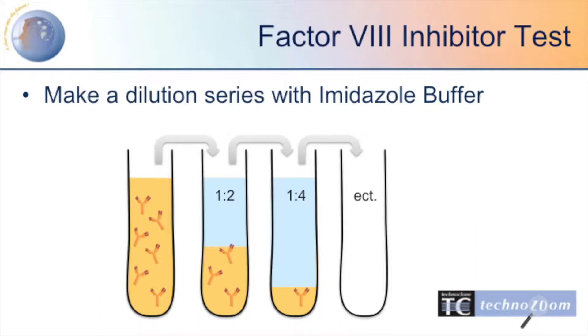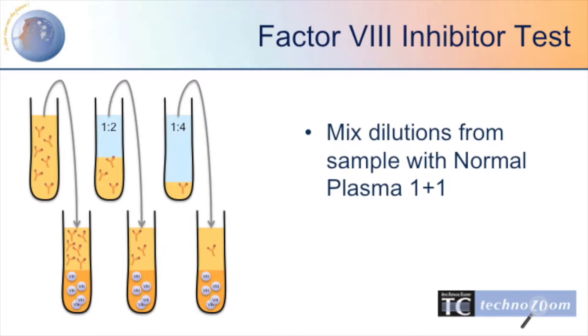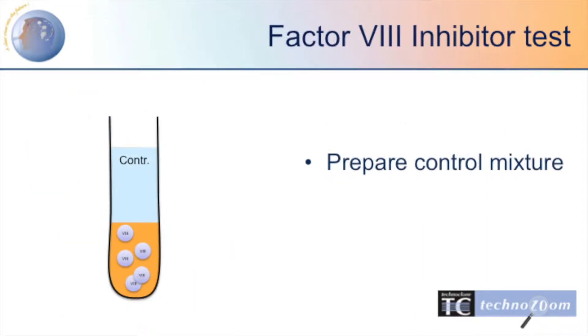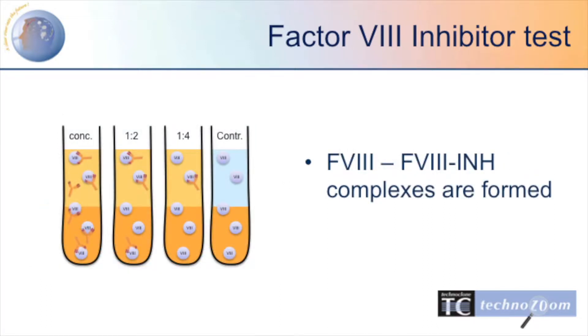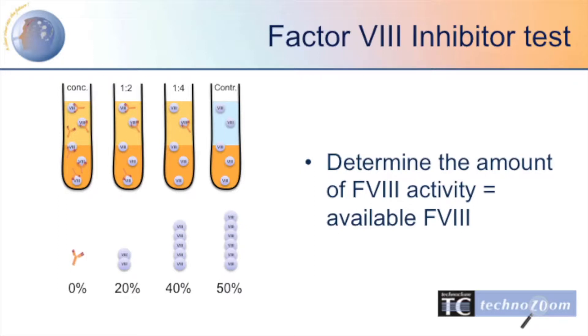During the test, we will make a dilution series with imidazole buffer. Then, we mix the dilution series with normal plasma one-to-one. Additionally, a control mixture needs to be prepared. The tubes need to be incubated for two hours in a water bath at 37 degrees. After calculation, the amount of Factor VIII activity can be determined.